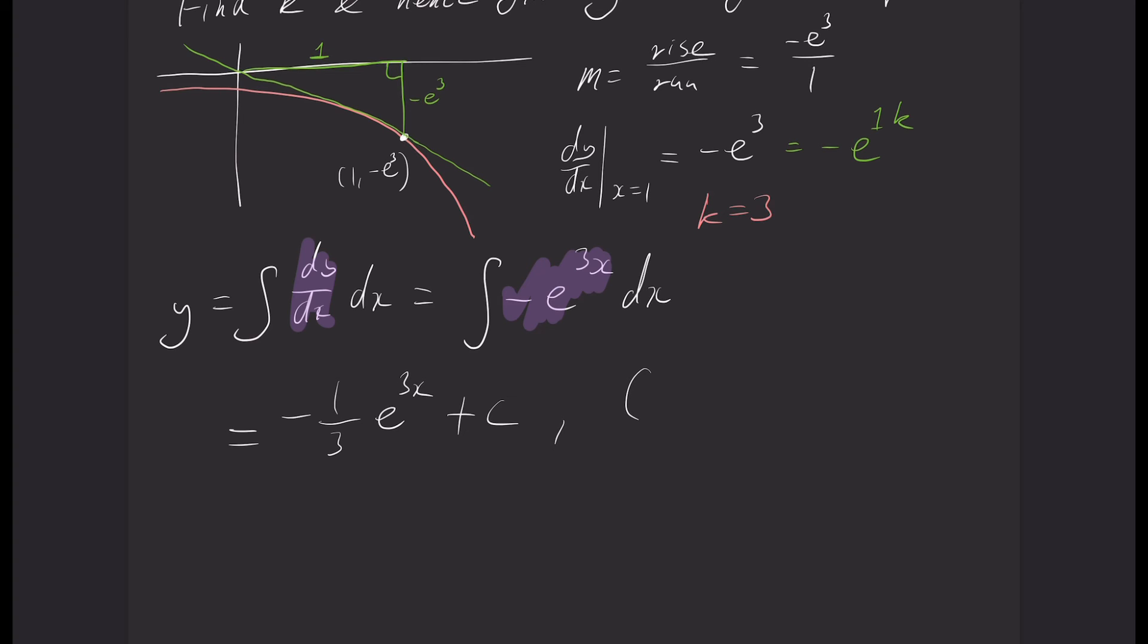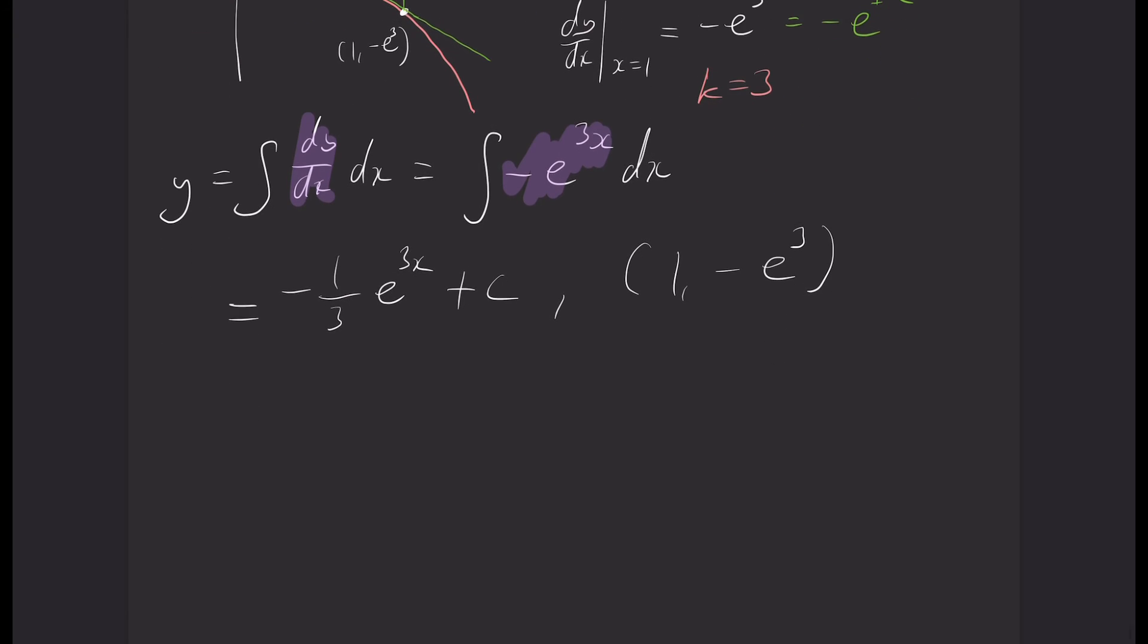I know I go through the point (1, -e³). That's given to me in the question. So I can now find my constant of integration. So I can say that negative e³ is equal to negative 1/3 e³ plus c.